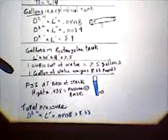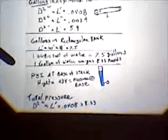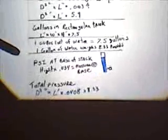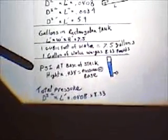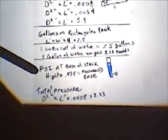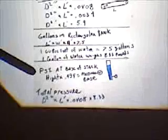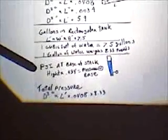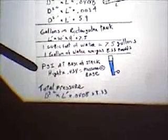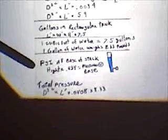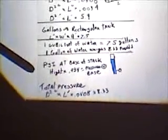One gallon of water weighs 8.33 pounds. And here's a formula we use for pressure at the base of a stack. If you have a column of water, whether it's a pipe or even a heating system or whatever, if you put a pressure gauge at the bottom of it, the pressure gauge will read the height times 0.434.